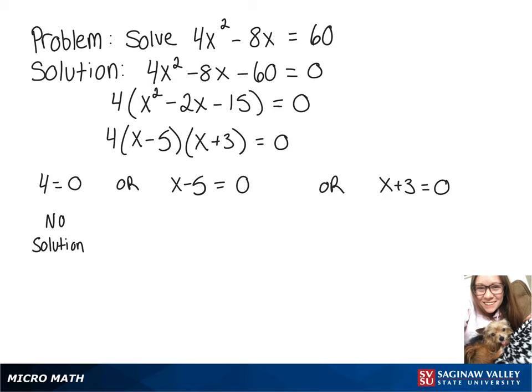So now looking at x minus 5 equals 0, we see that we have a solution of x equals 5 or solving x plus 3 equals 0 gives us another solution x equals negative 3.